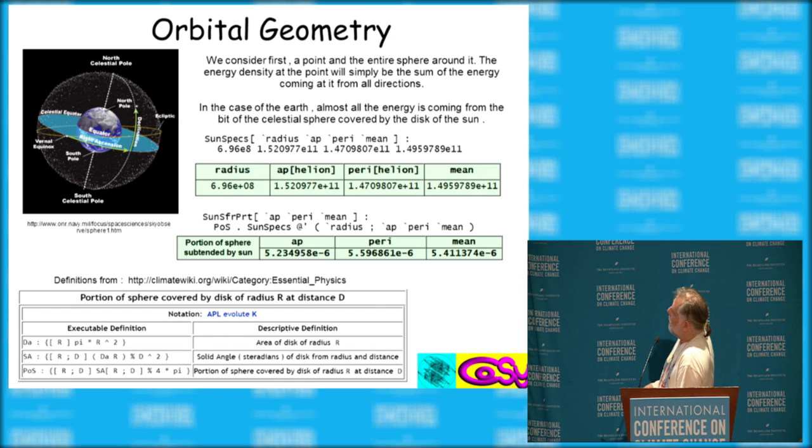The radius of the sun, our distance from it, and the aphelion and perihelion distance and mean distance. And then these couple of expressions here go and turn that into the proportion of the entire celestial sphere that the sun covers.